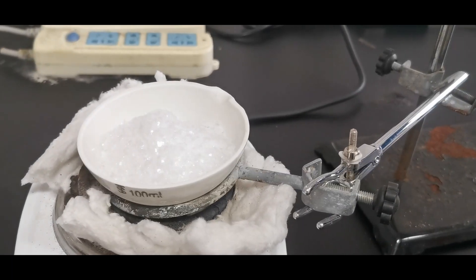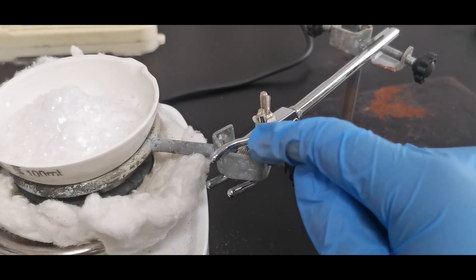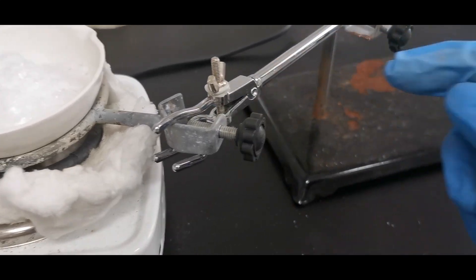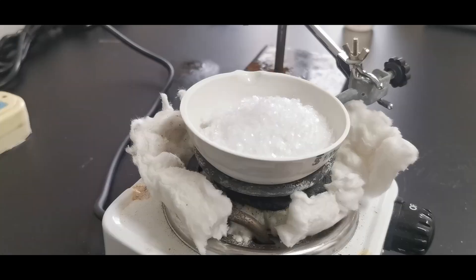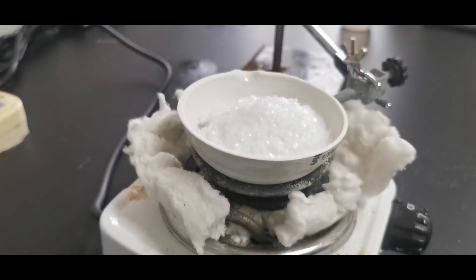The porcelain dish containing our chlorate was then hoisted above the furnace using an iron stand. Note that no plastic parts or joints should be used near the furnace, which is why I used two clamps instead of one. The stove is switched on, and the wool pieces are adjusted to insulate the dish better.